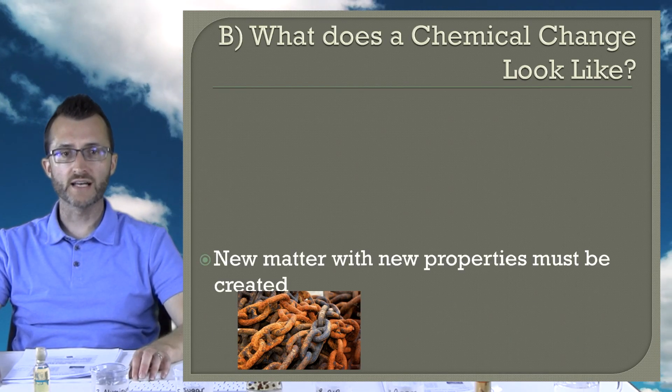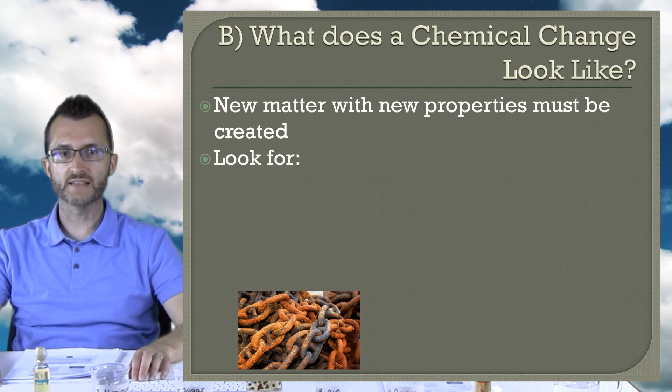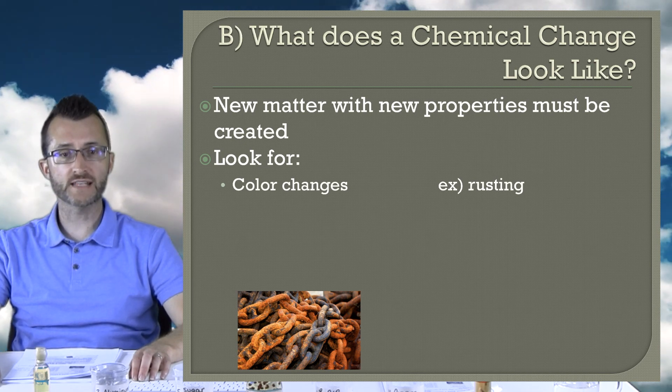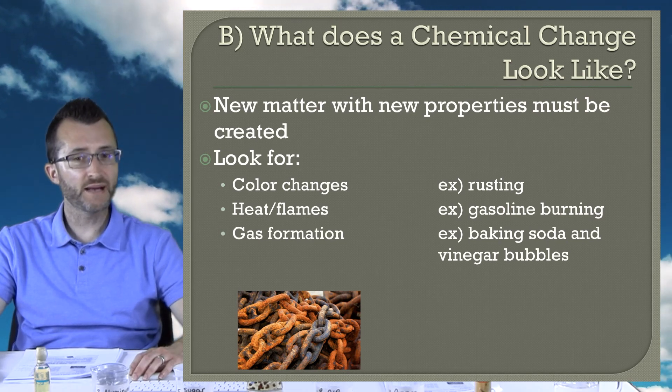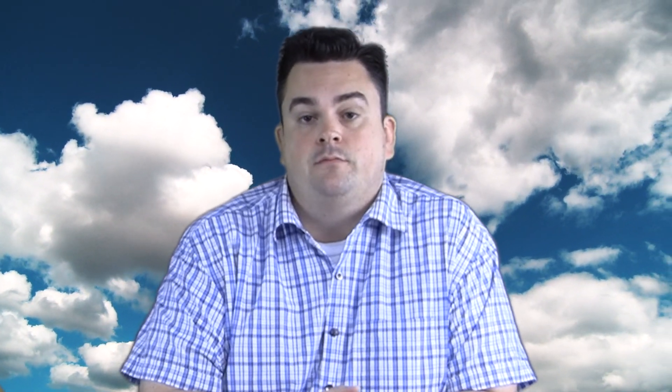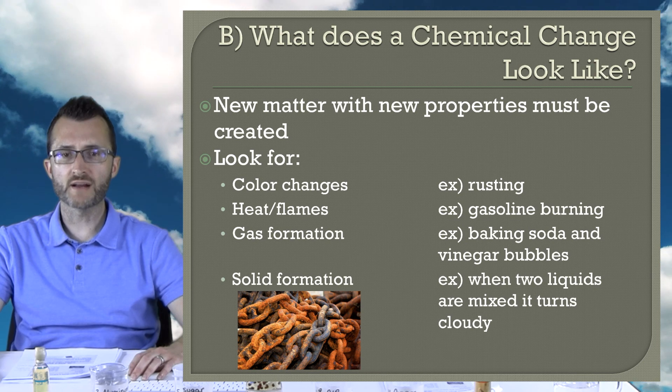What does a chemical change look like? New matter with new properties must be created. Color changes — for example, rusting. Heat or flames — example, gasoline burning. Flames are always a good indication of a chemical change, but you don't necessarily have to have them. Changes in temperature, either going up or down, can also be indicative of a chemical change. Gas formation — example, baking soda and vinegar bubbles. In a gas formation, it has to be a brand new gas — the baking soda and vinegar are creating brand new carbon dioxide bubbles. And finally, solid formation: when two liquids are mixed and it turns cloudy, that cloudiness is actually an insoluble solid being formed — a brand new substance. We call this process precipitation.